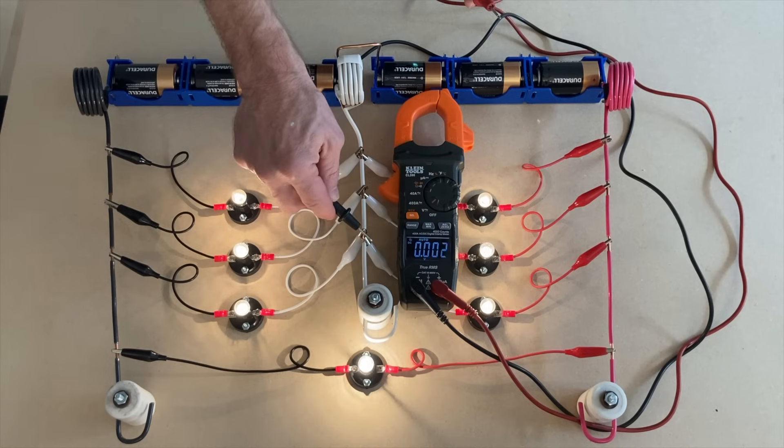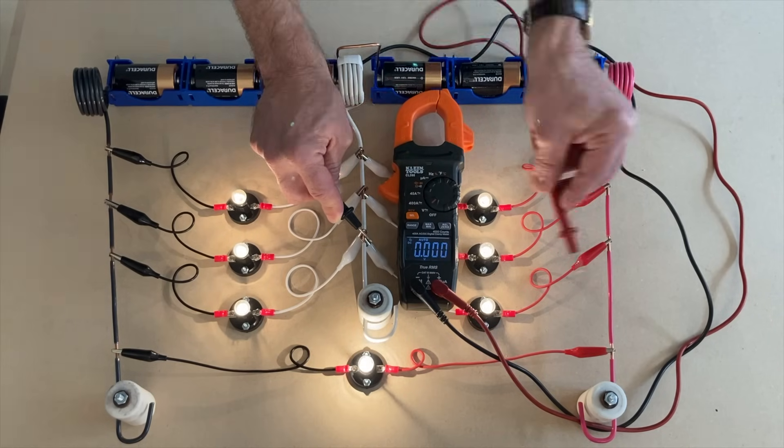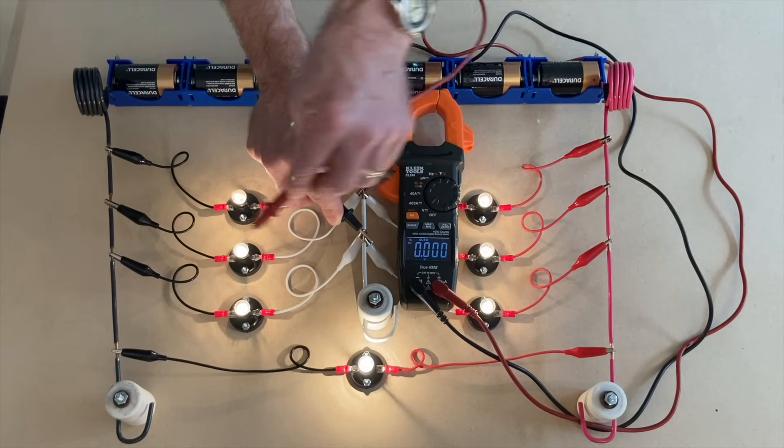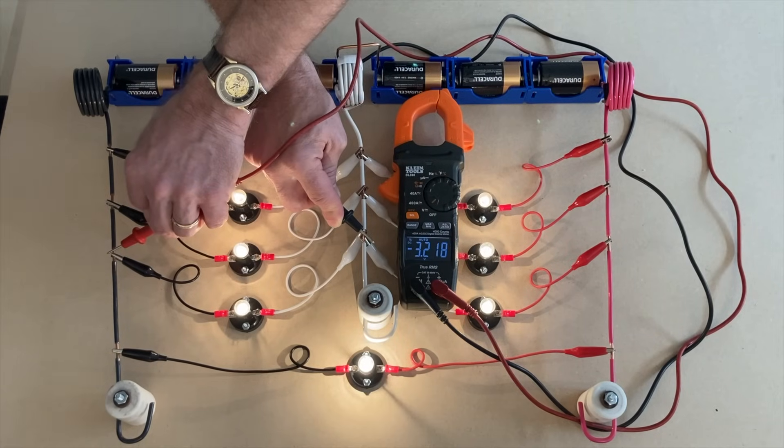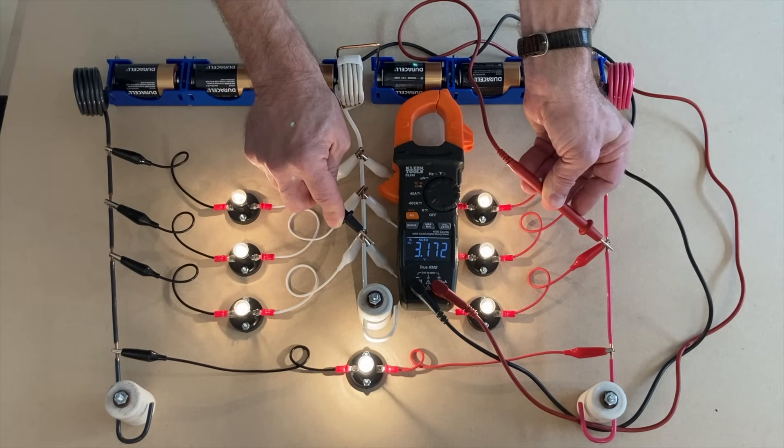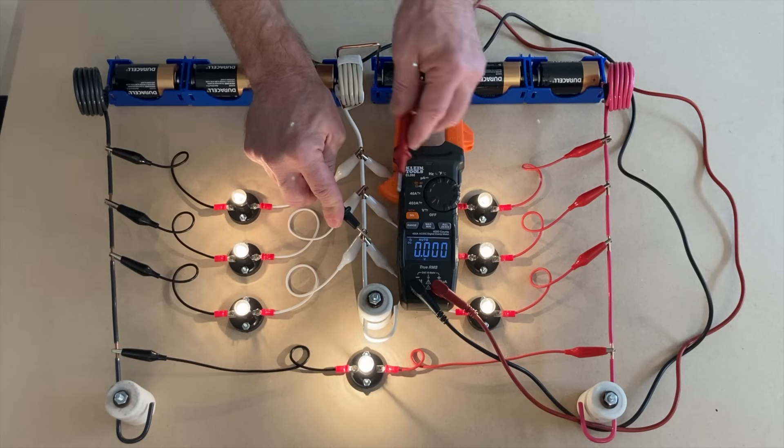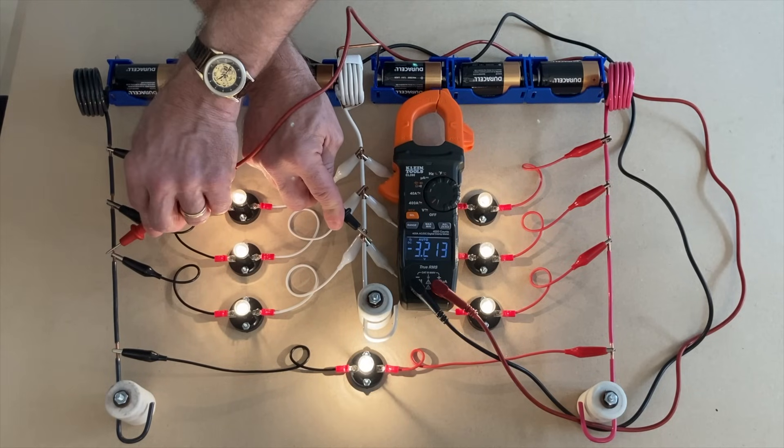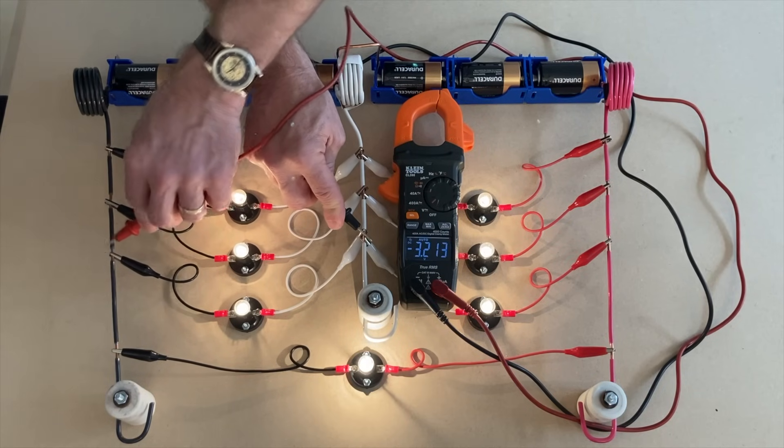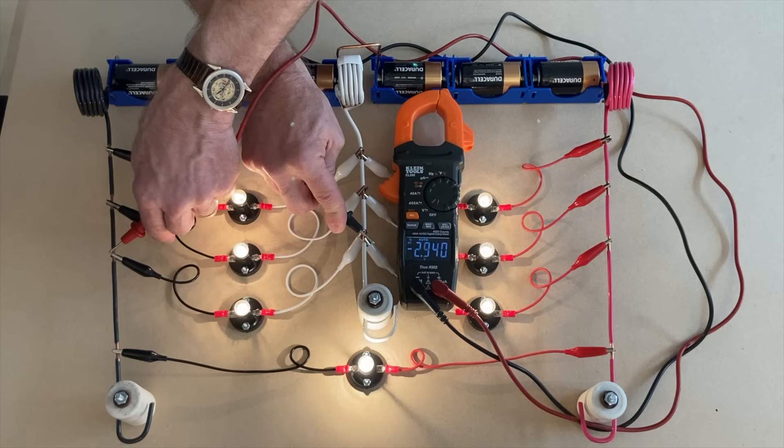But if I put my black lead in the neutral and measure both hots with my red, one will read negative and the other positive. This shows up from the perspective of the neutral. The black wire is negative reference going from the positive end of the batteries to the negative. It appears negative.